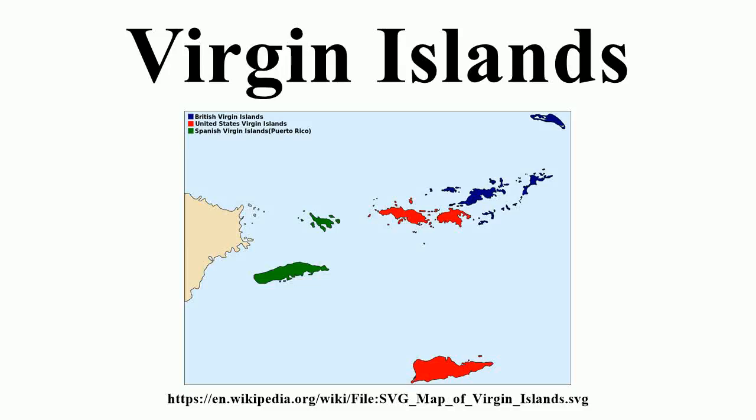The Virgin Islands are the western island group of the Leeward Islands, which are the northern part of the Lesser Antilles, and form the border between the Caribbean Sea and the Atlantic Ocean. Politically, the eastern islands form the British Virgin Islands and the western ones form the Virgin Islands of the United States.